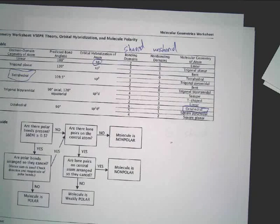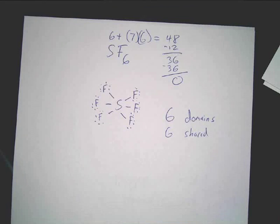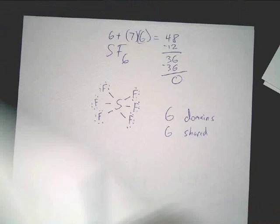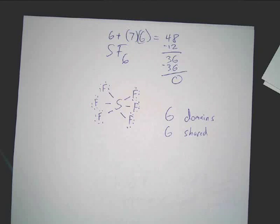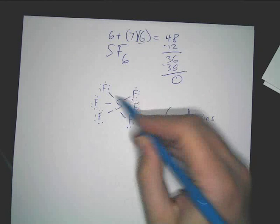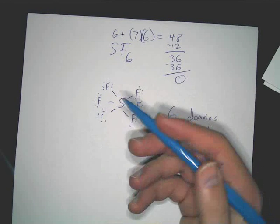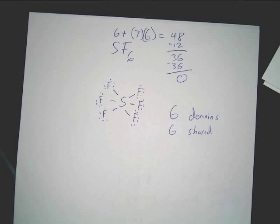Student asks: You have unshared? Teacher responds: There are no unshared. Student: How could you figure out if you don't have this one too? Teacher: Well, you just look. I mean, two, four, six, eight, twelve, everything that's attached to sulfur is bonded. Non-bonding is the non-shared.